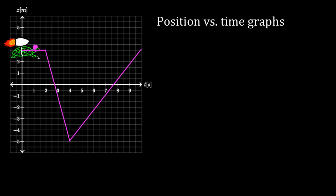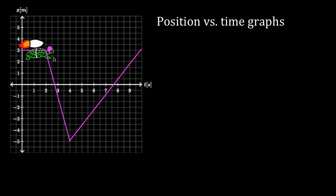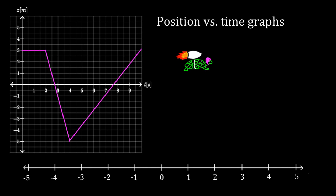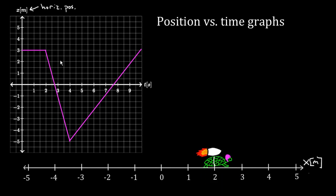The first mistake a lot of people make is thinking that the shape of the graph is the same as the shape the turtle takes through space — like maybe the turtle went forward, then down, then up. But that's not right; that's not even close. To figure out what this graph actually says, let me lay down a horizontal axis here. This axis represents the horizontal position, so I'll label it x, measured in meters. That's because over here, what we're graphing is x — the horizontal position of the turtle.